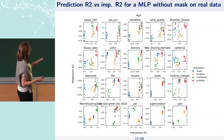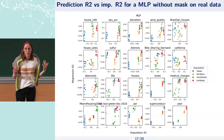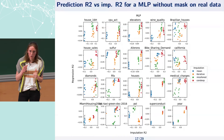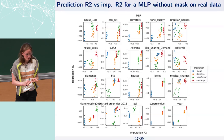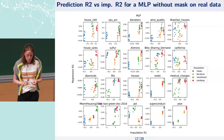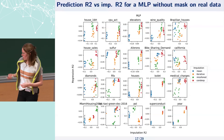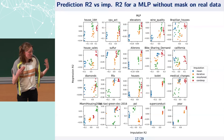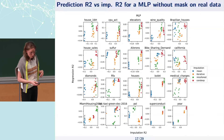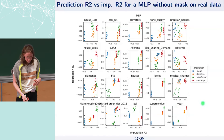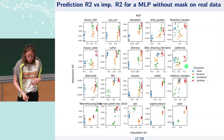Here's a first figure showing results for the MLP without the mask on real data. Each panel is one dataset; the x-axis is imputation quality and the y-axis is regression quality measured as R² score; each color is an imputation method. You see that for some datasets like Superconductor there is a lot of correlation between imputation quality and regression quality, while for others like California there is absolutely no correlation.